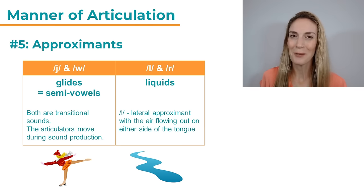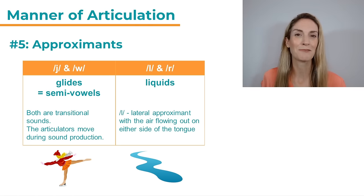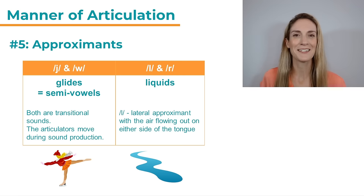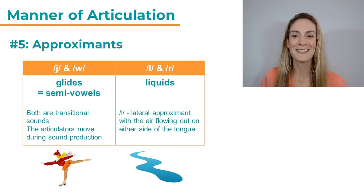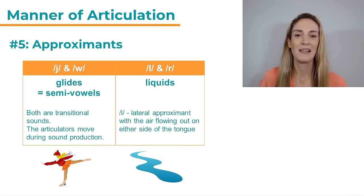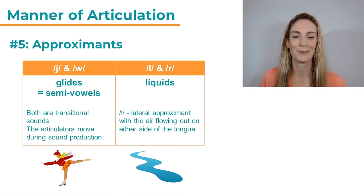I've added two images to help you remember the four approximant sounds. A figure skater represents the glides or semi-vowels J and W, gliding over the ice. And for L and R — the liquids — there's a little image of some liquid, some water.